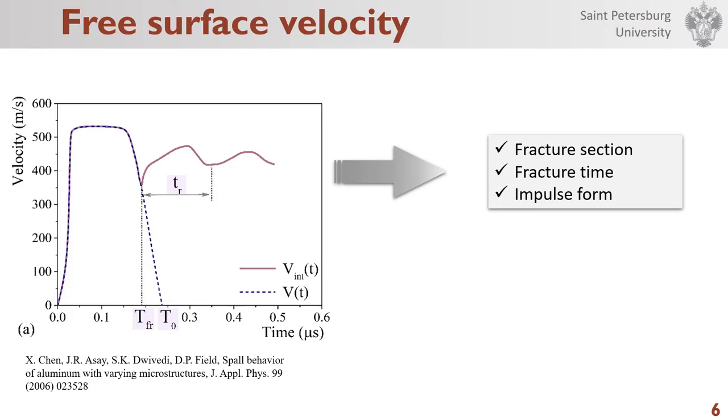Here on the slide, we can see a typical signal record from the laser interferometer that measures the free surface velocity. The first global minimum corresponds to the moment of registration by interferometer of spalling in the material. The further oscillation corresponds to wave movement along the spalled layer of the material.